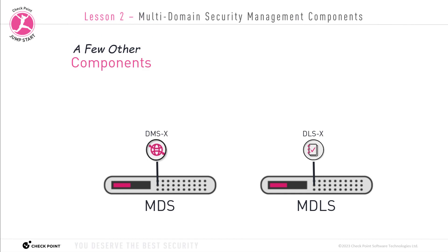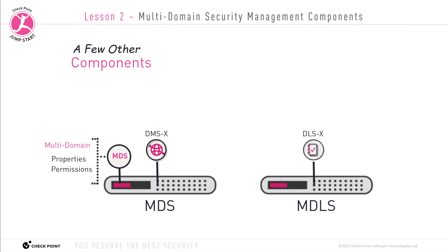There are a few other components to clarify. The MDS server houses the DMSs, but it also has its own partition on the MDS appliance — almost like a domain for the MDS server itself — called the MDS container. The MDS container houses MDS properties and permissions, such as who can access the MDS server, how many DMSs it holds, how many domains it manages, which administrators have permission to each domain, and which security gateways each domain management server manages. The MDS container stores all the important information for the MDS appliance, including all domain properties.